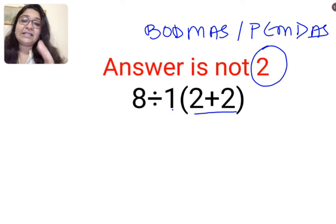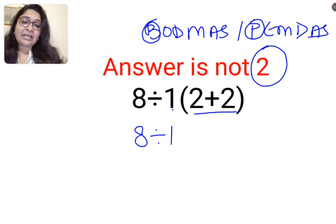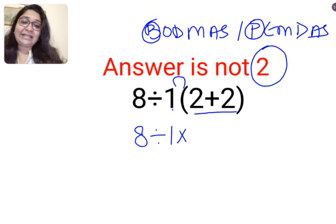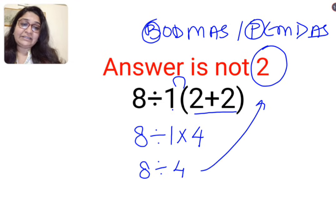In both cases, highest importance is given to brackets or parentheses. So first we keep the rest of the question as it is. Since there is no sign between this 1 and the bracket, it means multiplication, and then we have 2 plus 2 which is 4. At this point, people think 8 divided by 1 multiplied by 4 means 8 divided by 4, giving an answer of 2.